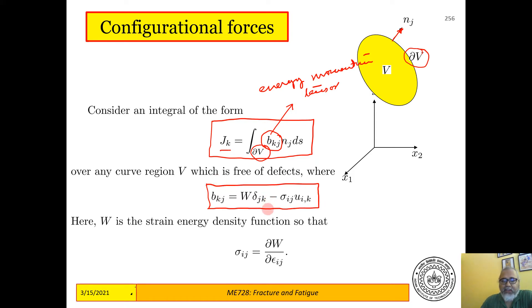So let us assume for this moment that this volume completely is free of defects and B_kj has this definition. So B_kj is W delta_jk minus sigma_ij u_i,k. And W as we have already met this quantity is the strain energy density function, which is another way of stating the constitutive equation of a material, and sigma_ij is equal to del W del epsilon_ij. We assume that a strain energy density function exists for the material of this yellow body.